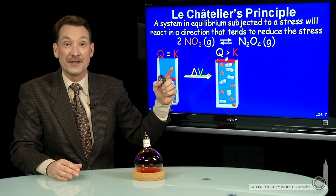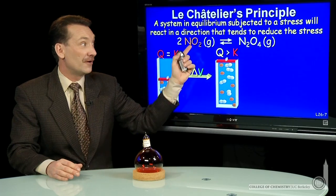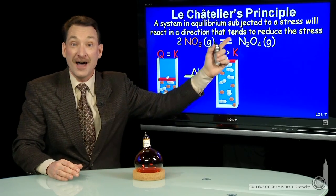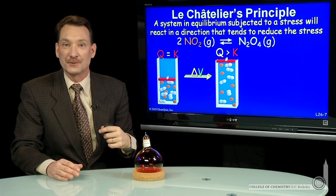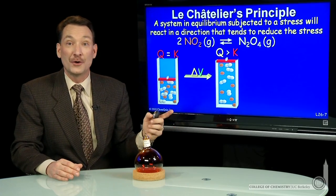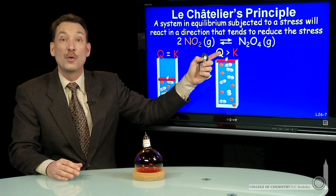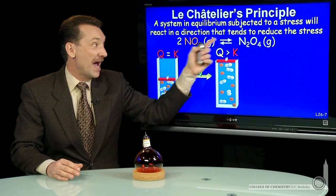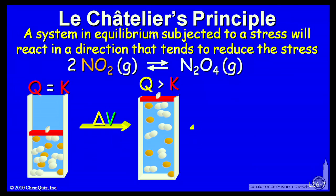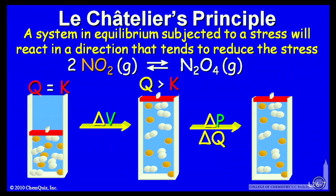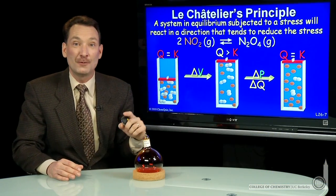In fact, Q will be greater than K. And you can prove that to yourself by putting in one half the partial pressures for the equilibrium quotient expression. So Q greater than K, the reaction will shift back to favor the reactants so that Q can again equal K. So you'll have a change in pressure, and a shift towards the reactants in this case so that Q again will equal K.